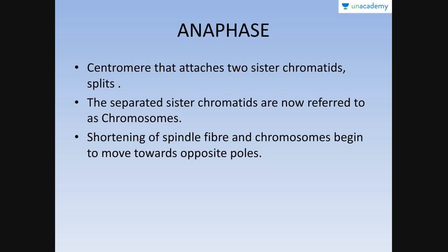The next phase is anaphase — ana means up. This is the stage where the sister chromatids separate from each other and move towards the opposite poles. Chromosomes condense and become shorter because it is easier for short chromosomes to move away from the equator rather than long, slender, twisted ones. Anaphase is the phase during which the centromere splits apart the two sister chromatids, and the separated sister chromatids are now referred to as chromosomes.